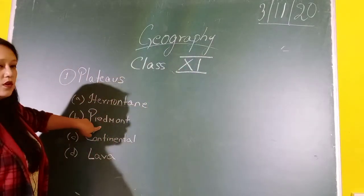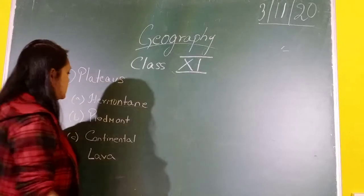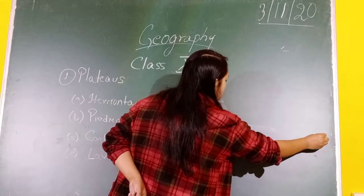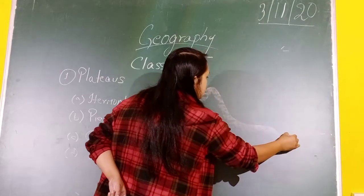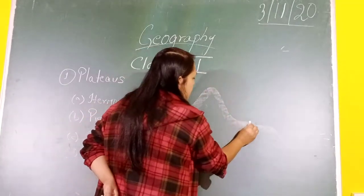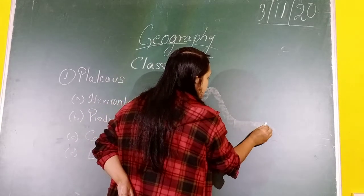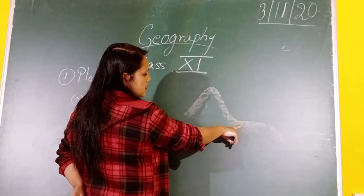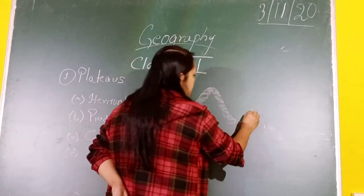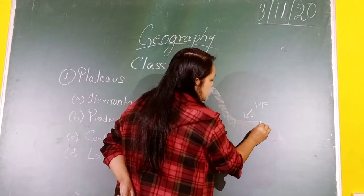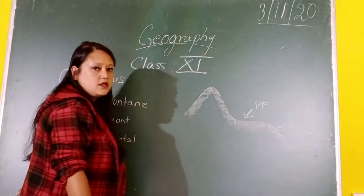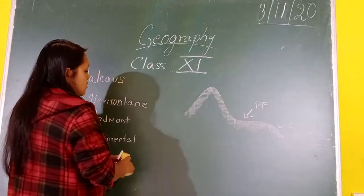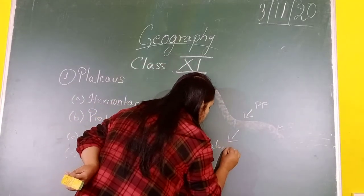The second classification is the piedmont plateau. These types of plateaus are formed at the foothills of the mountains. As shown in the diagram: this is a mountain, at the foothills is the flat surface of the plateau, and on one side it is sloping — some plateaus have a slanting slope on only one side. This type is known as a piedmont plateau. The example of a piedmont plateau is the Malwa Plateau, which is in India.